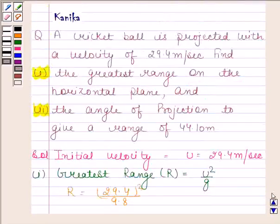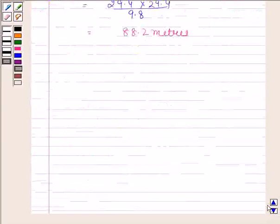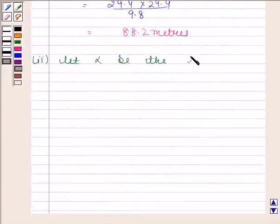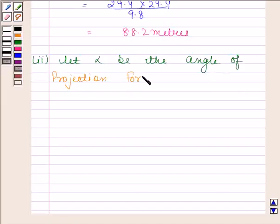For the second part, we need to find the angle of projection to give a range of 44.10 meters. Let alpha be the angle of projection.